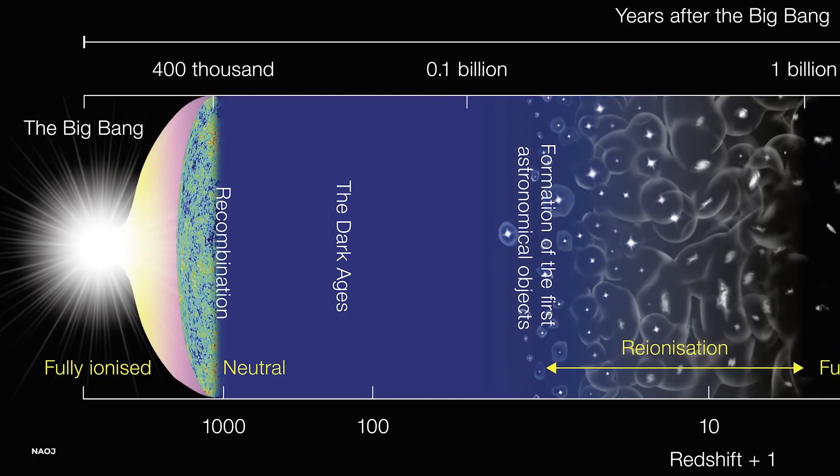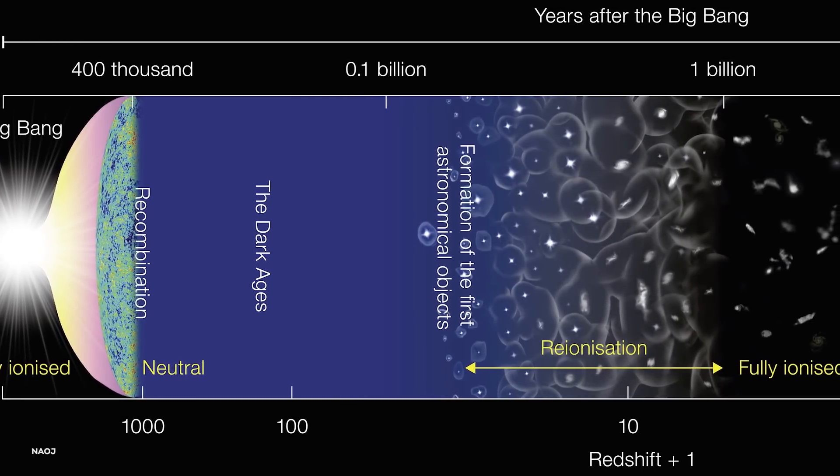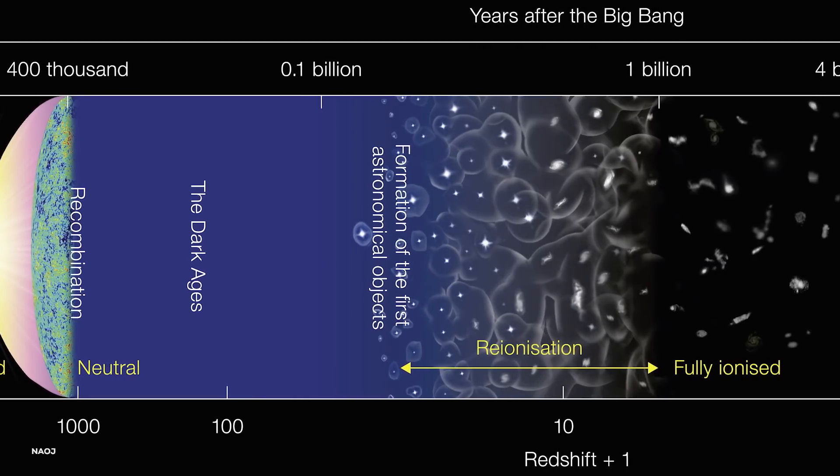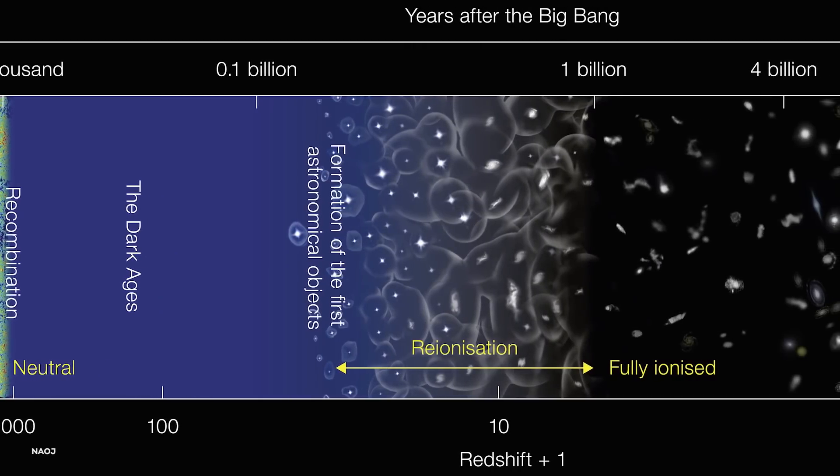However, the huge particles we are familiar with today are alien to us. They have no mass in these early phases. The particles and antiparticles of the standard model are easy to create, even as the universe cools down over a small period of time.